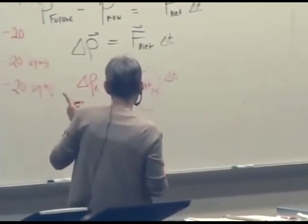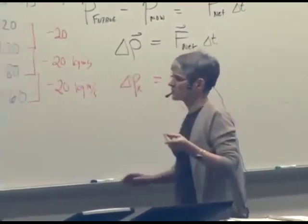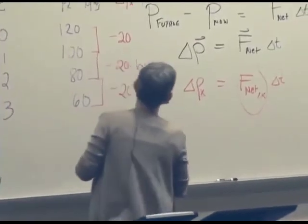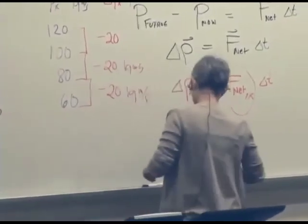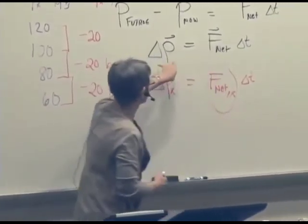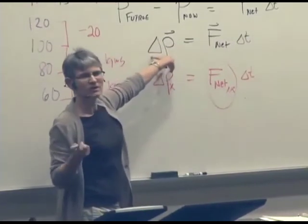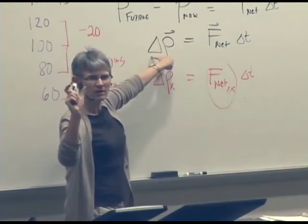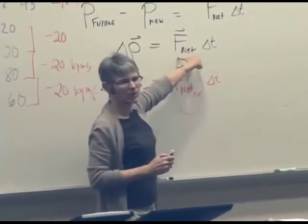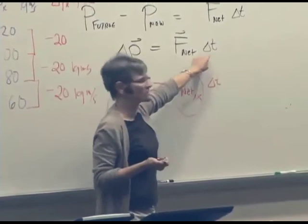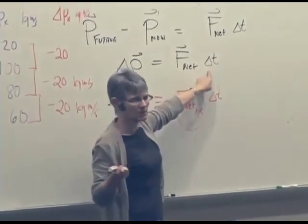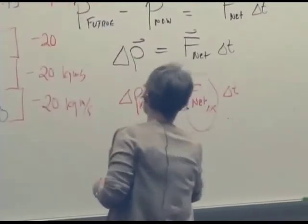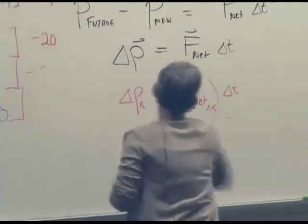Okay, one other thing we can get from this form of the equation is, of course, information about directions, which we get from any vector equation. Notice that this tells us that the direction of ΔP over some time interval has to be the same as the direction of the net force, because Δt is going to be a positive number. We're running time forwards here. So let's see an example of what that might mean.